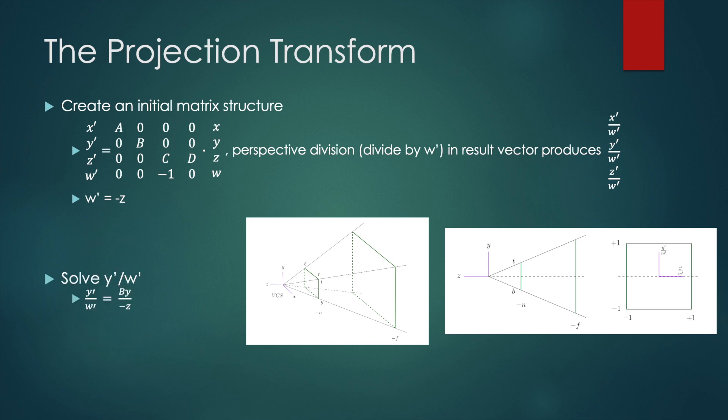Let's start the derivation of our projection matrix by considering what y prime over w prime would map to in the normalized viewing box. We know y prime is equal to b constant times y when we do our matrix multiplication. We know w prime is always minus z due to that constant minus one in the matrix. So y prime divided by w prime is by over minus z.